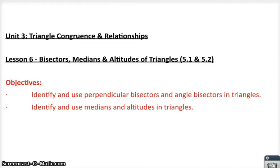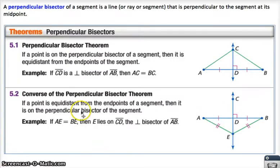Alright, here we go. 5.1 and 5.2. This has to do with bisectors and medians and altitudes and things we do to cut up triangles — angle bisectors, perpendicular bisectors, all that kind of stuff.